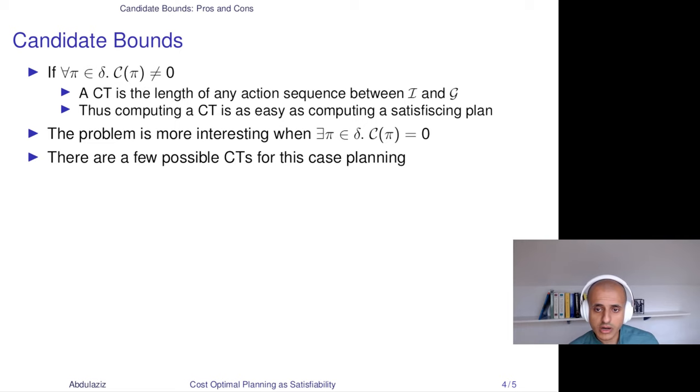Now let me start with the candidate bounds or candidate CTs. If you have the guarantee that all the actions have non-zero cost, then a CT is the length of any action sequence between the initial state and the goal. Computing a CT in this case is as easy as computing a satisfying plan, which is easy given the current state of the art. But the problem becomes more interesting when you have an action whose cost is zero. In the coming slides, I will discuss a few possible CTs for this case.